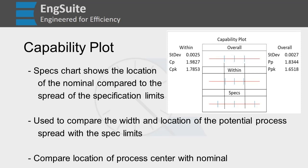It gives you an idea of where your upper and lower potential process spread are within the specs. This is similar to your capability histogram, where we're plotting the width and spread of our process compared to the tolerance spread.